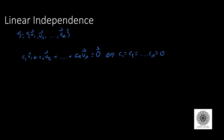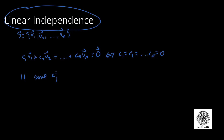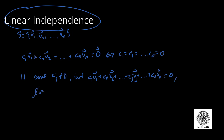If there is a way to get zero where not all of the c's are zero — that is, some cj is not zero, but c1*v1 + c2*v2 + ... + cj*vj + ... + cn*vn still equals zero — then the set is called linearly dependent.